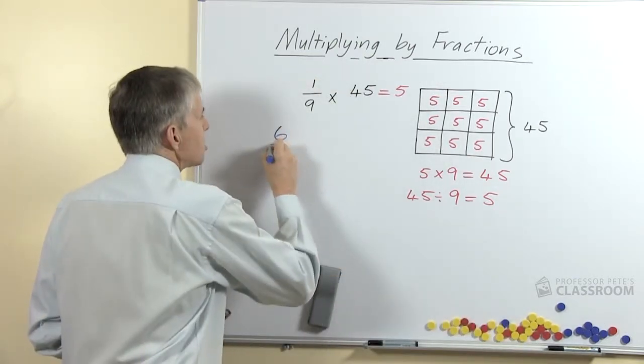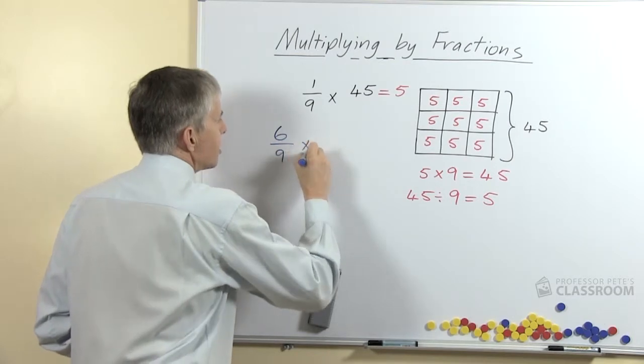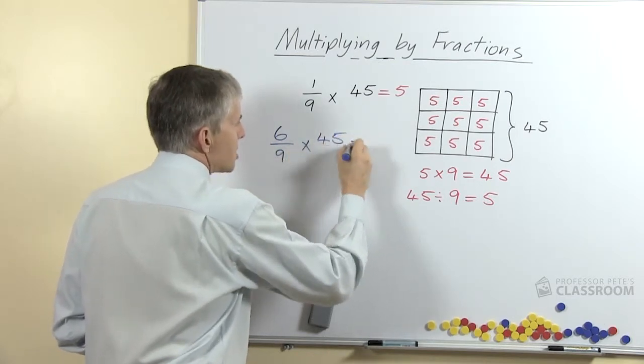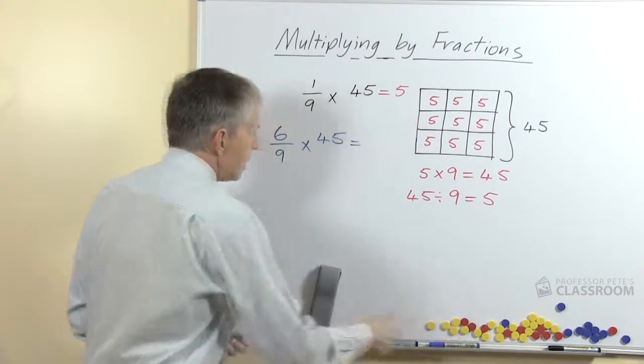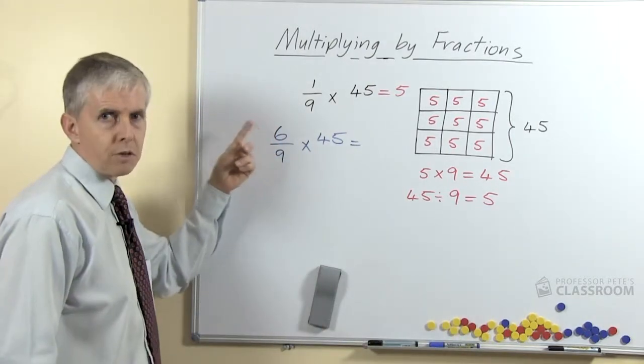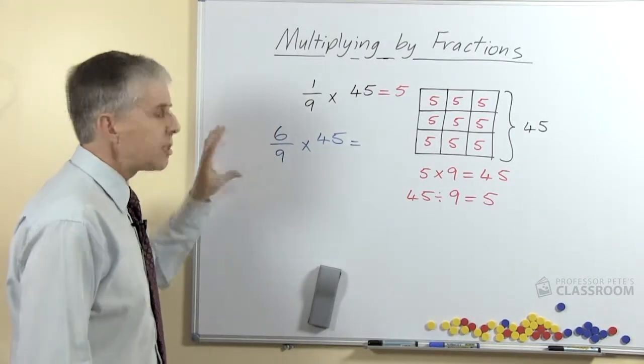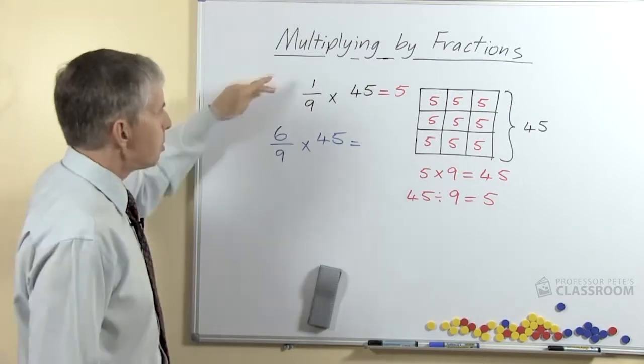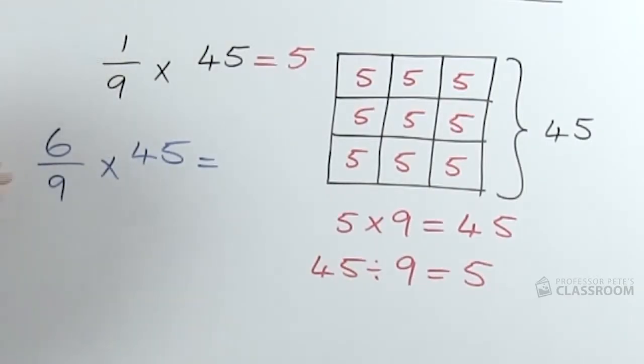Supposing the next question was 6/9 times 45, so we have the same whole number, 45, the same denominator but a different numerator. This is now a 2-step question, but providing you know the answer to the first one, this isn't going to be that hard.